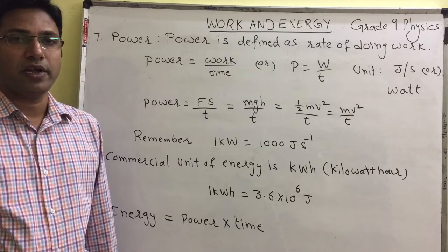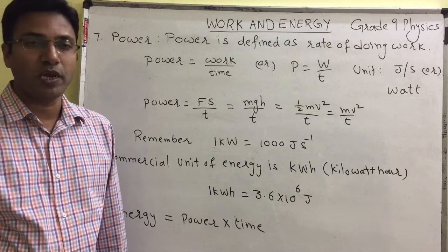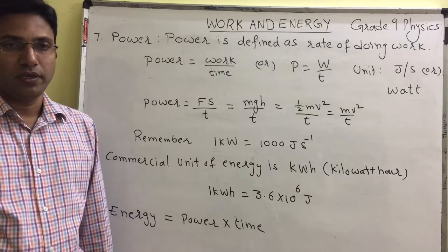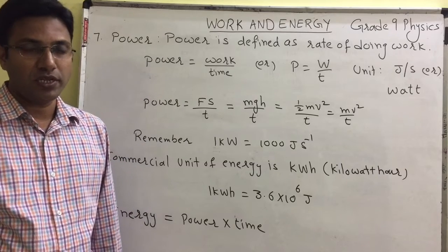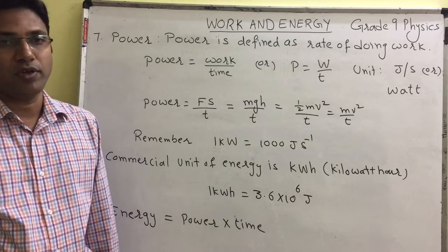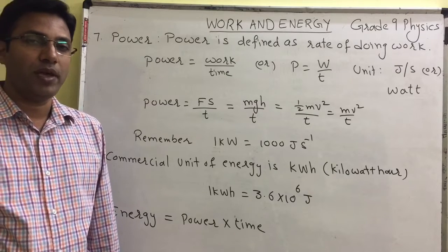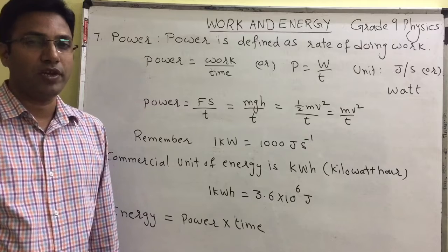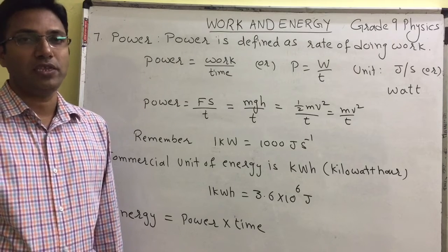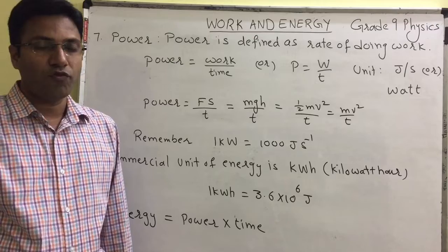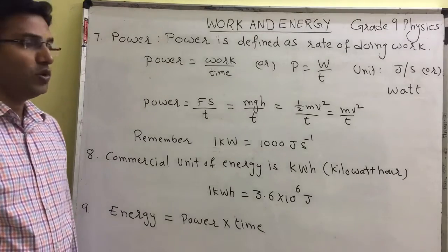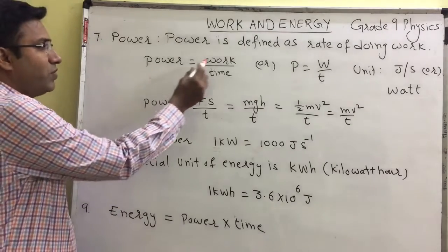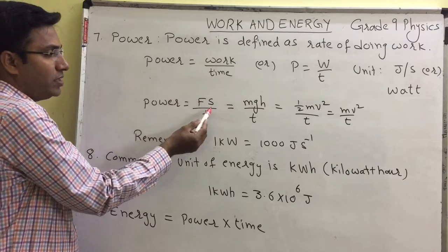Now let us see the next topic: power. Power is nothing but the rate of doing work — how much amount of work is done in a given time is called power. If you consider two water pumps, they may have different powers, meaning they are doing different amounts of work in a given time. So power is defined as the rate of doing work. The formula of power is work divided by time. The units of power are joules per second or watt.